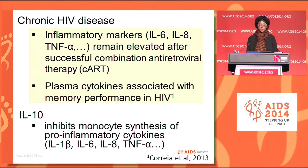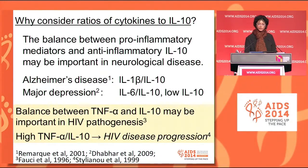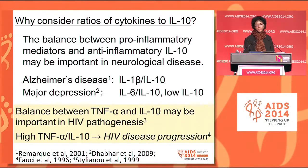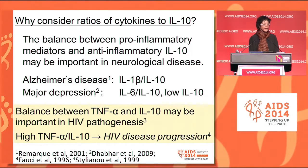IL-10 is an anti-inflammatory cytokine that inhibits monocyte production of many pro-inflammatory cytokines. We were motivated to consider the ratios of pro-inflammatory cytokines to IL-10 because such ratios have been shown to be significant in other neurological conditions. For example, Alzheimer's disease is associated with high IL-1 beta over IL-10, major depression is associated with the IL-6 to IL-10 ratio. It was suggested back in 1996 that the balance between TNF-alpha and IL-10 may be important in HIV pathogenesis, and indeed a high TNF-alpha to IL-10 ratio is associated with HIV disease progression.